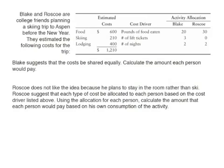Let's look at an example. We have Blake and Roscoe, college friends planning a skiing trip to Aspen before the new year. Their total estimated costs are $1,210: $600 for food, $210 for skiing, and $400 for lodging. They determined a cost driver for each activity — pounds of food eaten for food, number of lift tickets for skiing, and number of nights stayed for lodging.